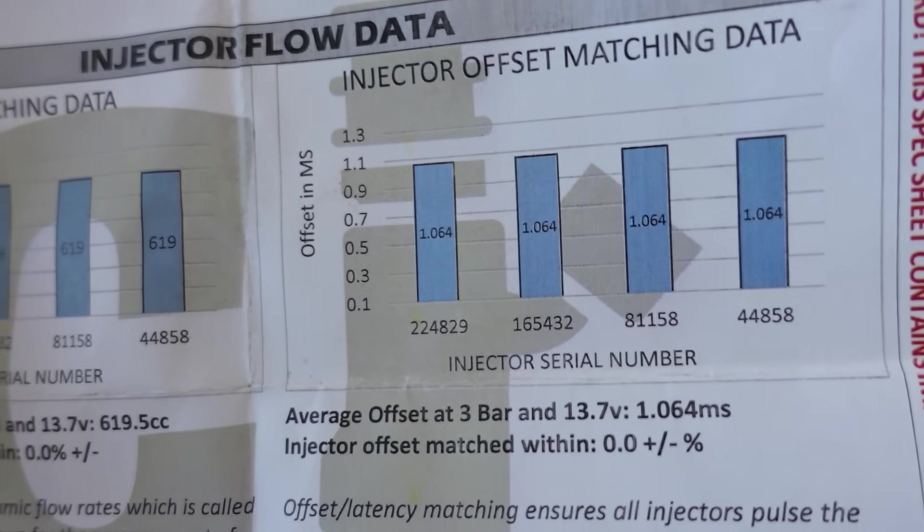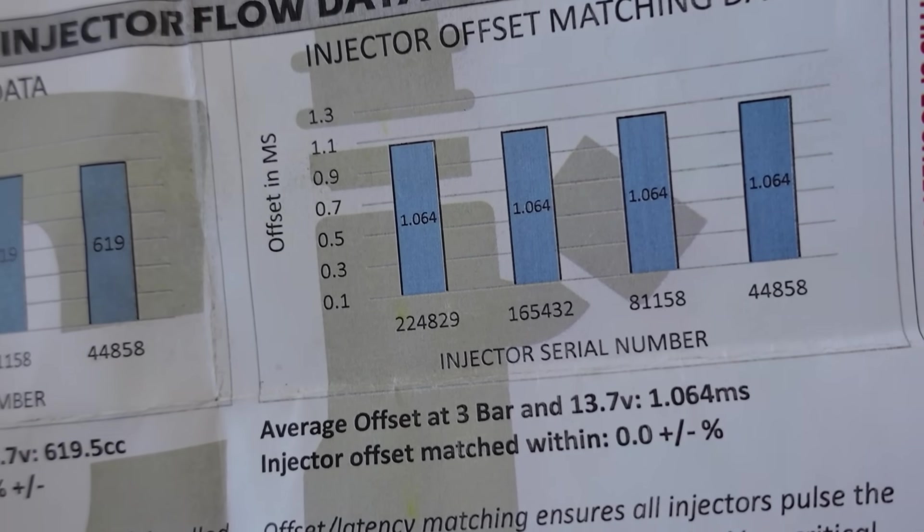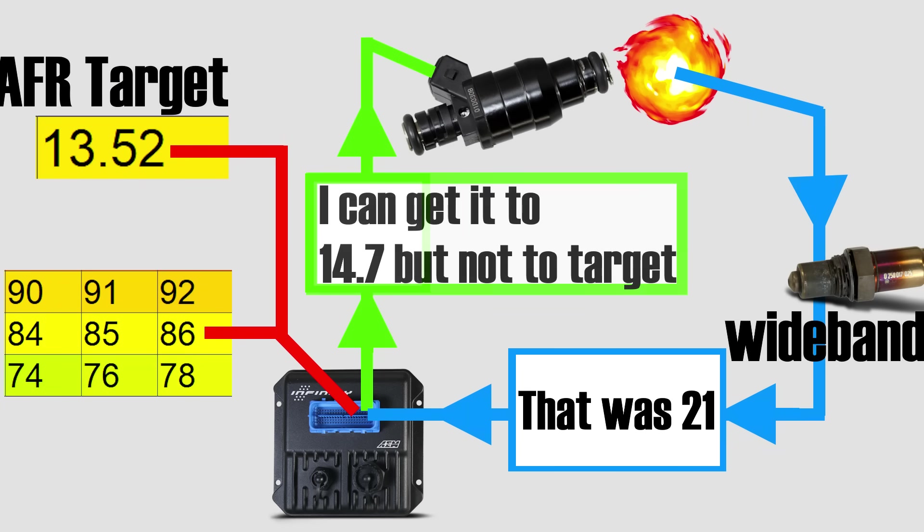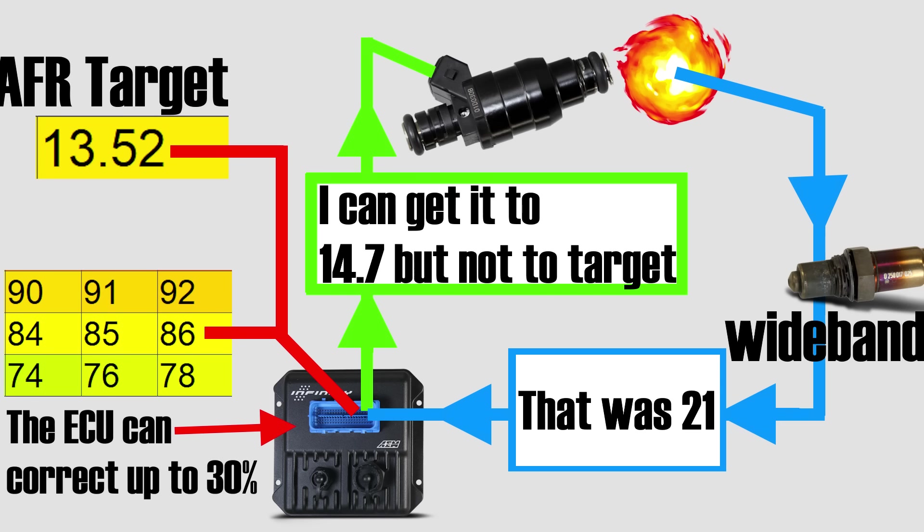Now, there is a limit to how much the ECU can correct the amount of fuel based on the feedback provided by the wideband sensor. And this amount is usually limited to 30%. In other words, the numbers in your VE table can be off by a maximum of 30%.